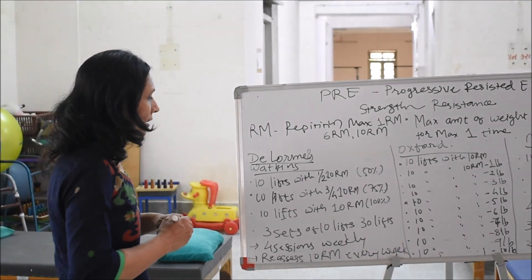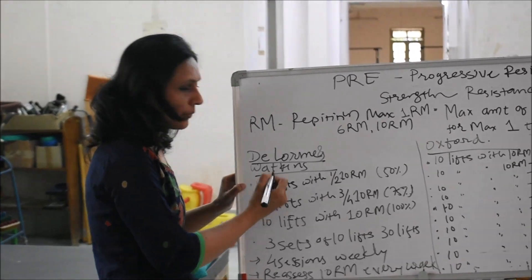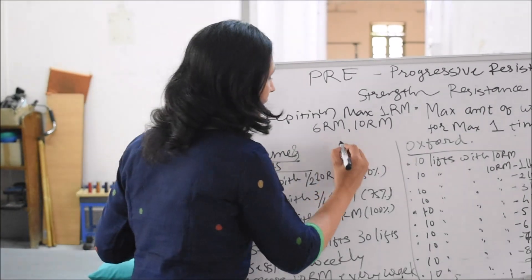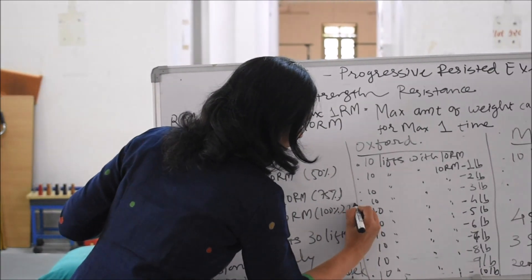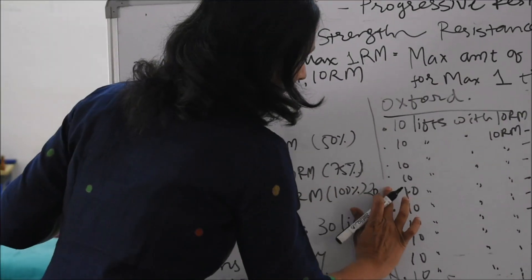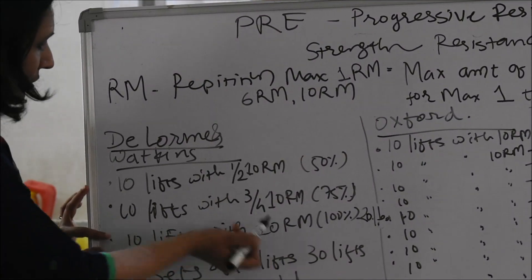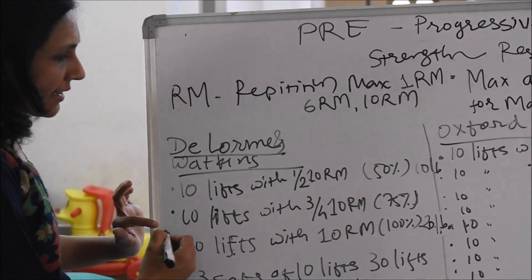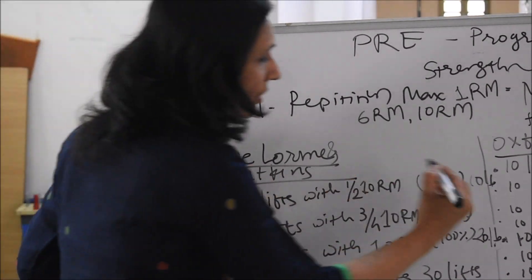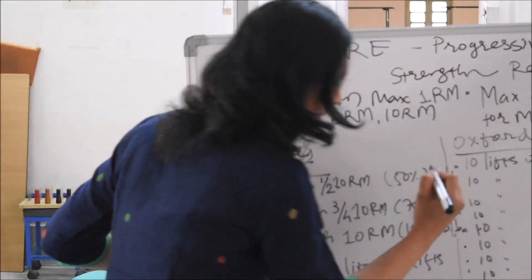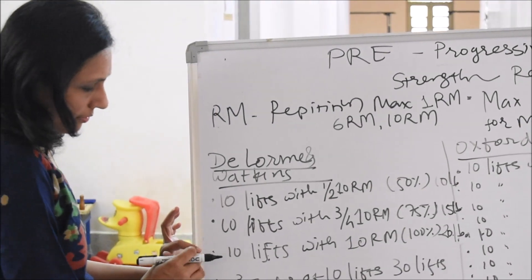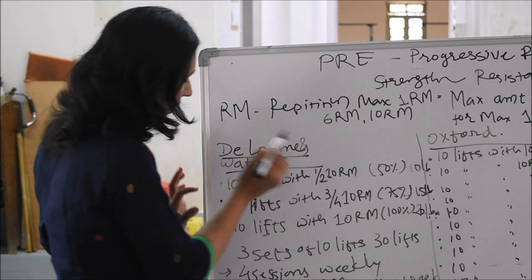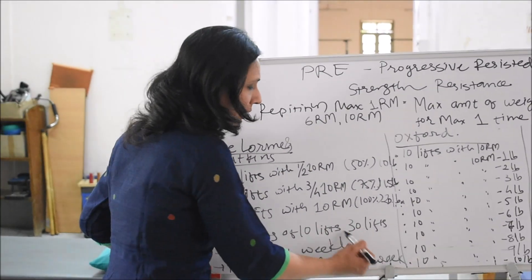To understand with an example: for biceps strengthening, suppose the 10RM is 20 pounds. On the first set the patient does 10 repetitions with half of the 10RM — that is 10 pounds. Then the next set is 10 repetitions with 75% of 10RM — that is 15 pounds. And the third set is 10 repetitions with 100% — that is 20 pounds. So 10 pounds, 15 pounds, and 20 pounds with 10 repetitions each, making 3 sets of 10 — 30 total lifts in one session.